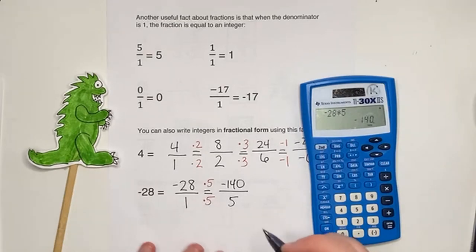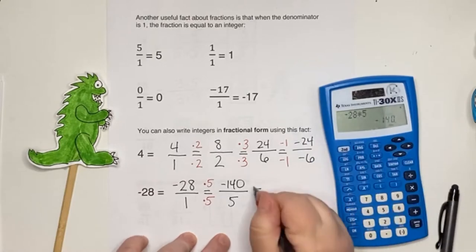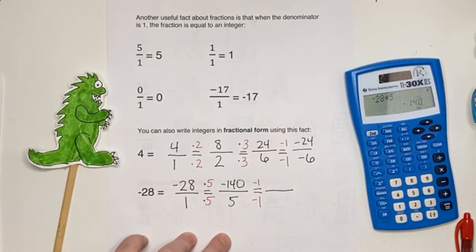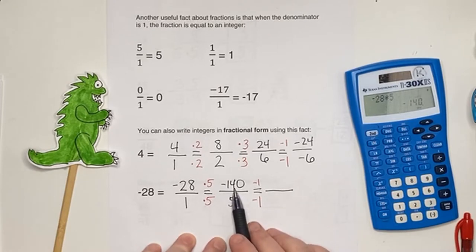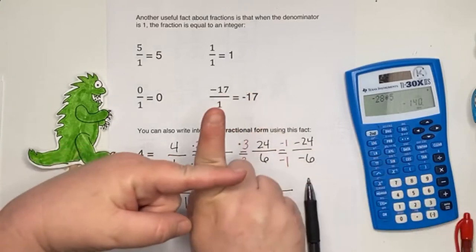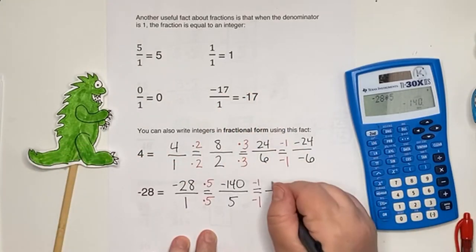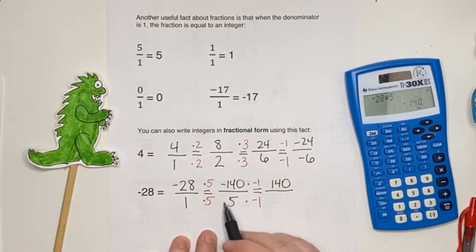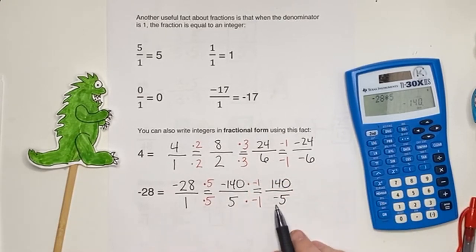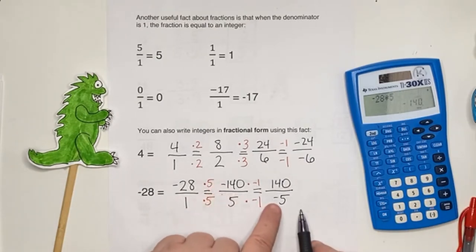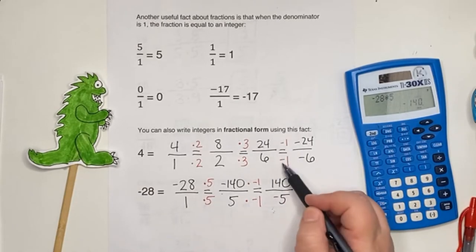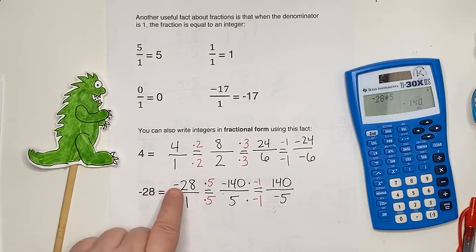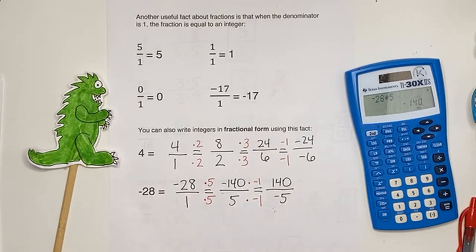You can even multiply by negative one — two minuses together make a plus — so negative 140 times negative one is positive 140, and five times negative one is negative five. So 140 over negative five is another way to write that fraction. This just shows the minus can be on top or on the bottom; as long as there's just one, you're fine. If there are two negatives, they cancel each other out and it's positive to begin with.